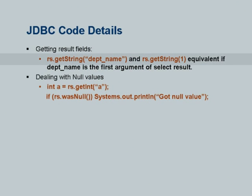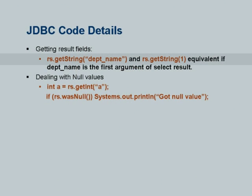These two are equivalent: getString("department_name") and getString(1), because this is the first attribute. You can use either the column name or positional notation. Positions start from 1, not 0.